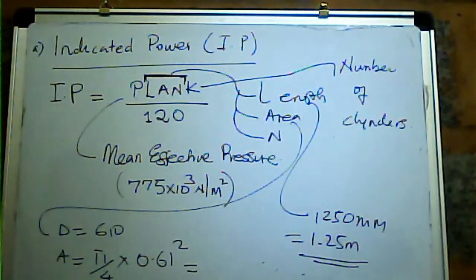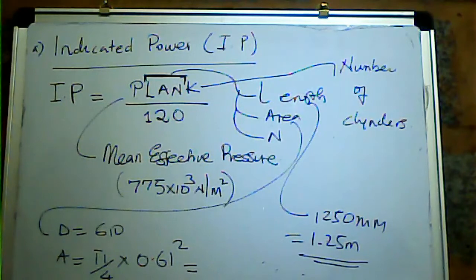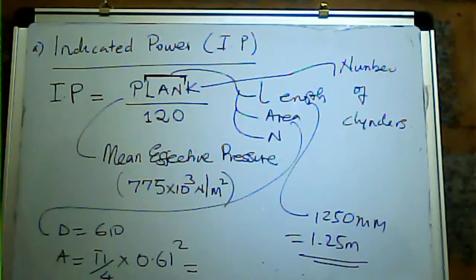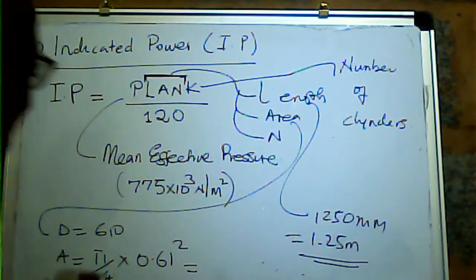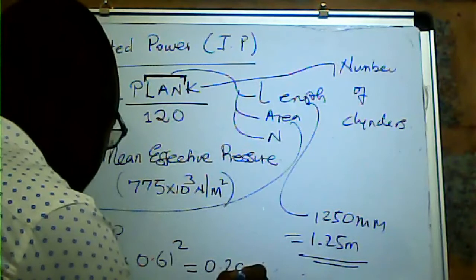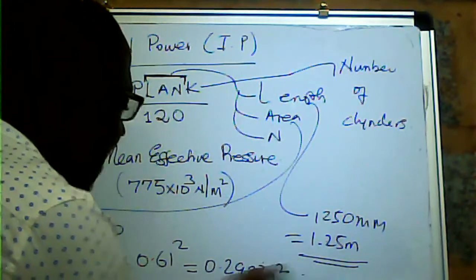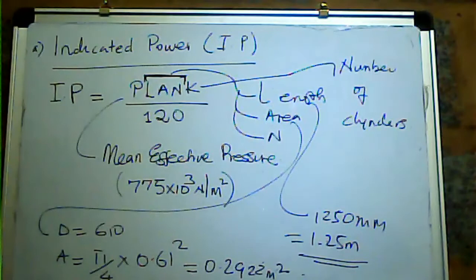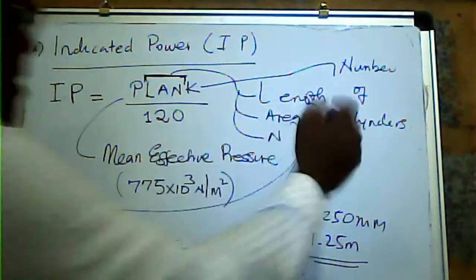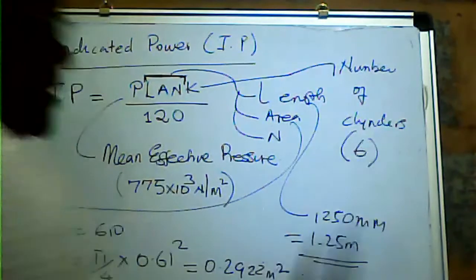Why 0.61? We are dividing by 1000 so that we work in metres. So π × 0.61² divided by 4 gives our area as 0.2922 m². The number of cylinders K was given as 6. So ladies and gentlemen, those are the parameters you need to know in order to find the indicated power.